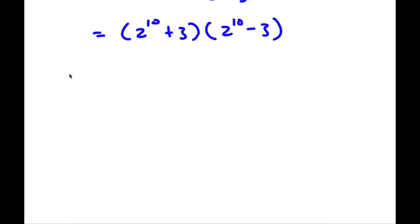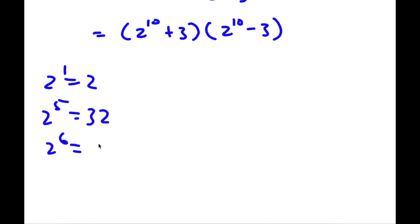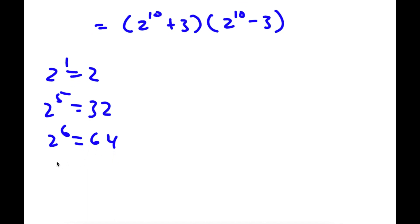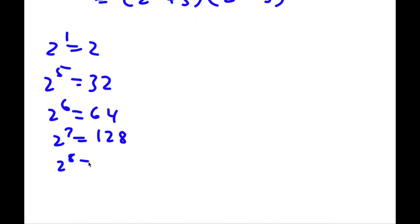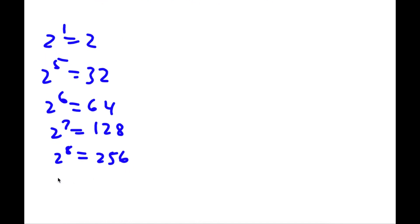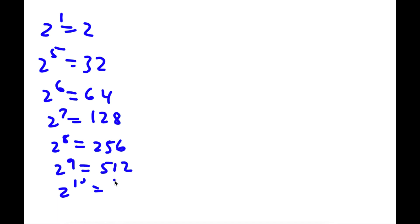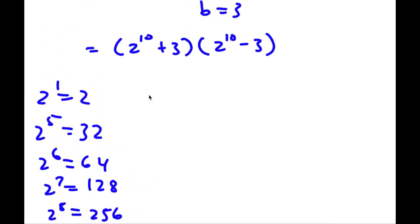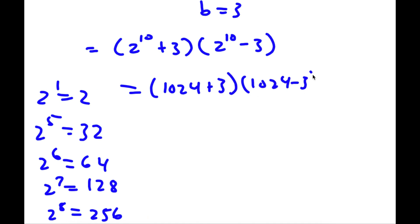Now 2 to the power of 10: starting from 2 to the power of 1 is 2, 2 to the 5th is 32, 2 to the 6th is 64, 2 to the 7th is 128, 2 to the 8th is 256, 2 to the 9th is 512, and finally 2 to the 10th is double 512, which is 1024. So now I have (1024 plus 3) times (1024 minus 3), which is 1027 times 1021.